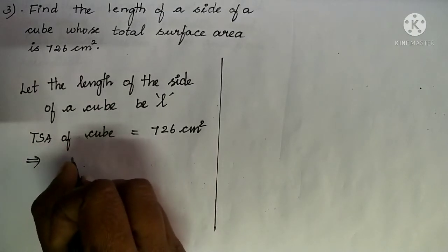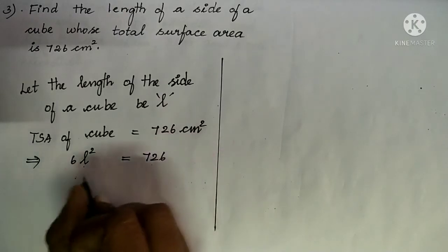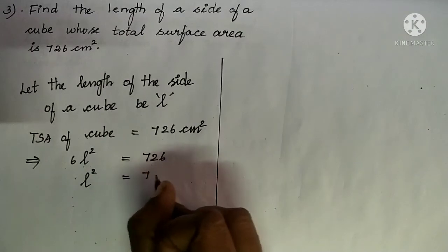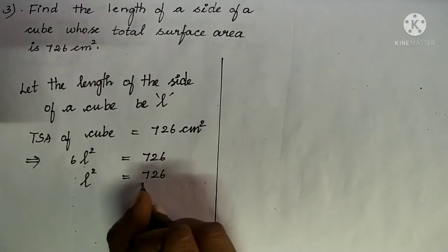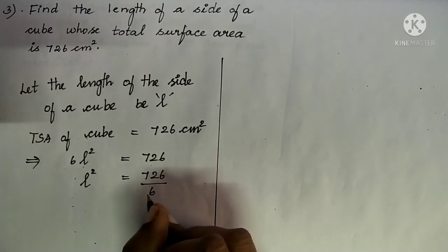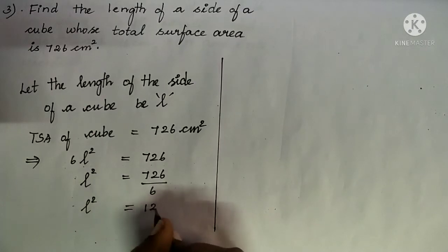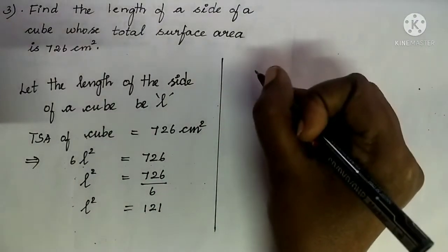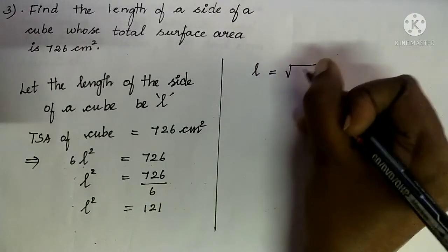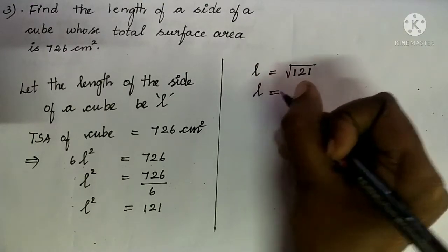We will substitute that: 6L² is equal to 726. We are going to find the value of L. So L² will be equal to 726 divided by 6. If we cancel, we will get 121. So L² is equal to 121, which means L is equal to the square root of 121. The square root of 121 is 11.